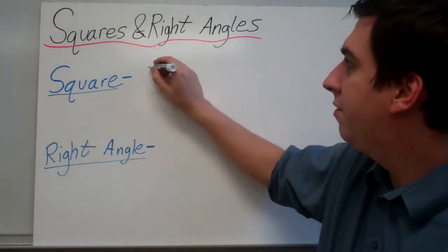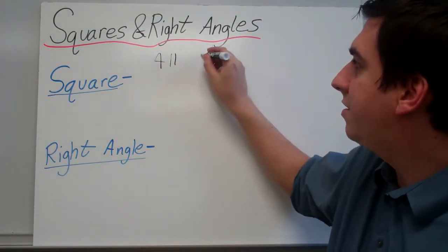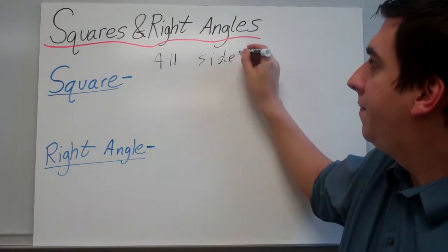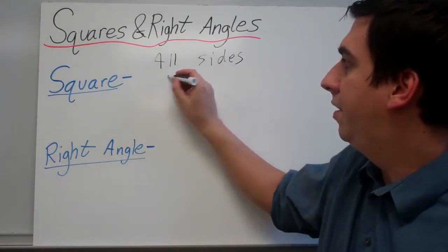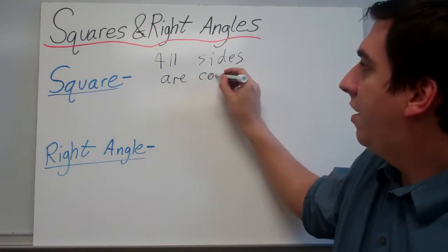A square is a quadrilateral where all of its sides are the same. And in math we use the word congruent. All sides are congruent.